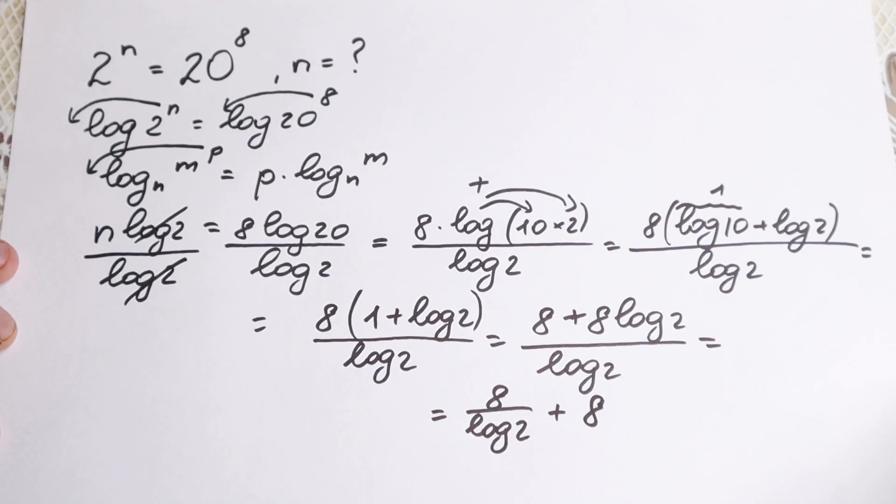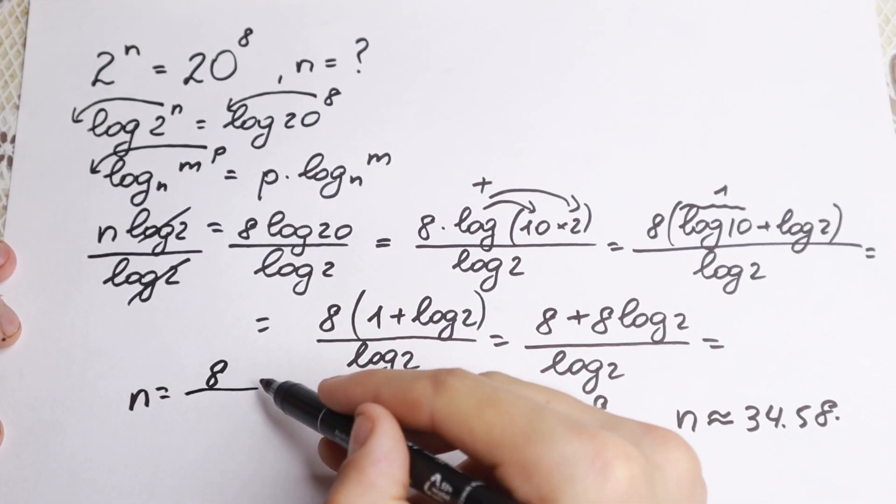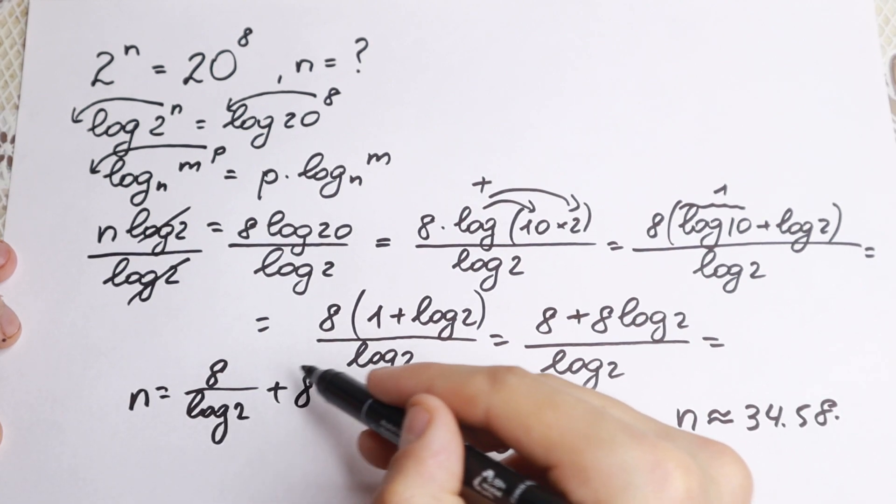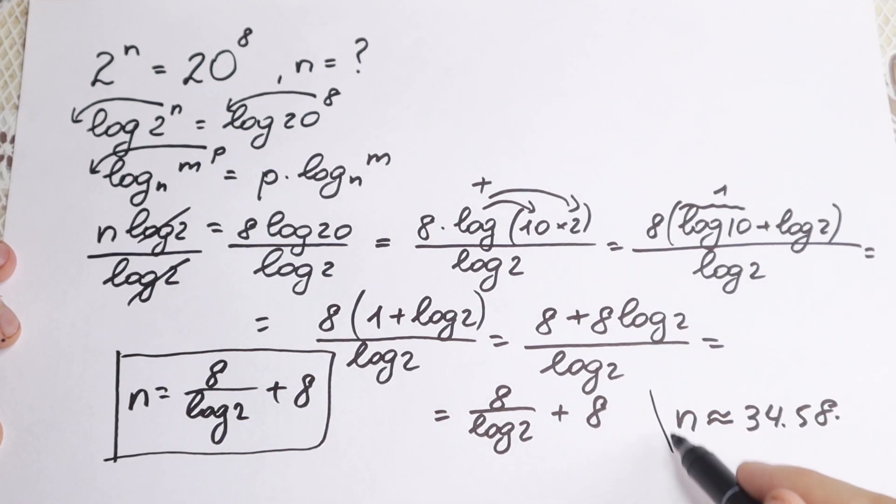And if you're interested in the approximate answer, our n approximately equals 34.58. But our n equals 8 over logarithm 2 plus 8. This is our answer.